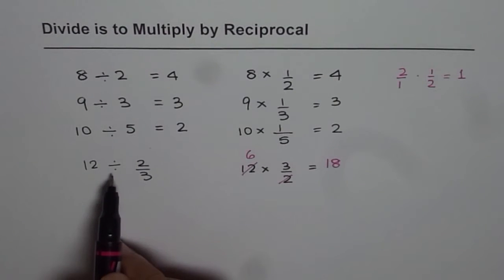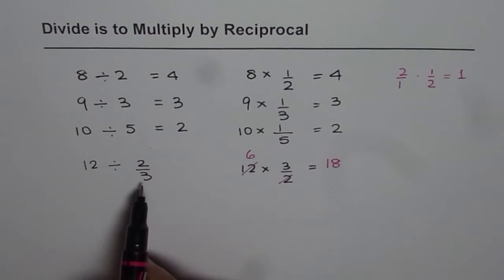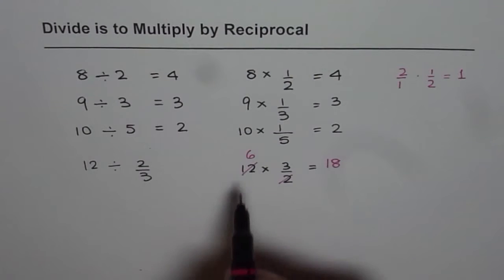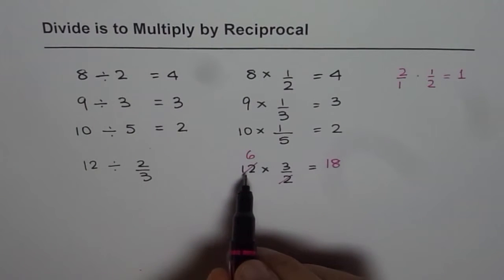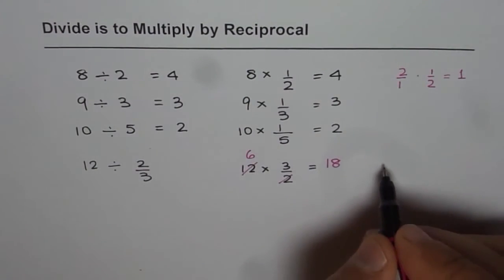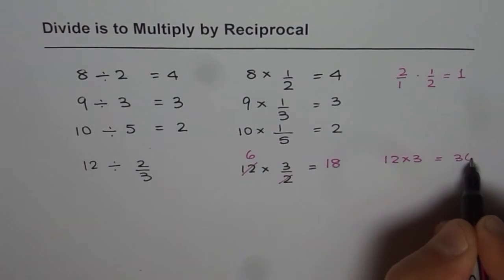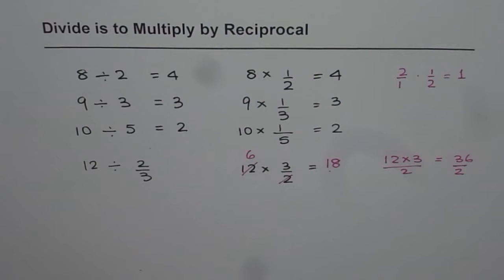So 12 divided by 2 over 3 is same as 12 times 3 over 2 which is 18. You could have done it like this also. You could multiply first. That is 12 times 3. 12 times 3 is equal to 36 and then divide by 2, you will get 18. You could have done like that also. Now solving 12 divided by 2 over 3 is kind of difficult but writing it as multiplication makes it simple. Do you see that part?